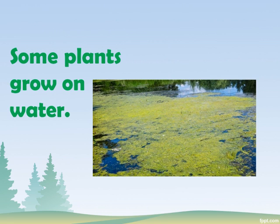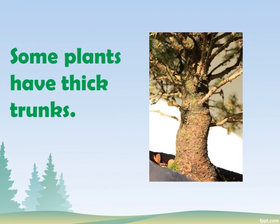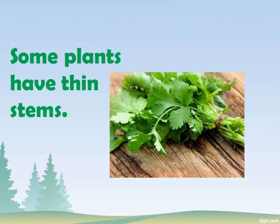Some plants have thick trunks — for example, trees. They are very big in size and have a strong, thick, and woody stem called a trunk. Some plants have weak and thin stems — for example, coriander.